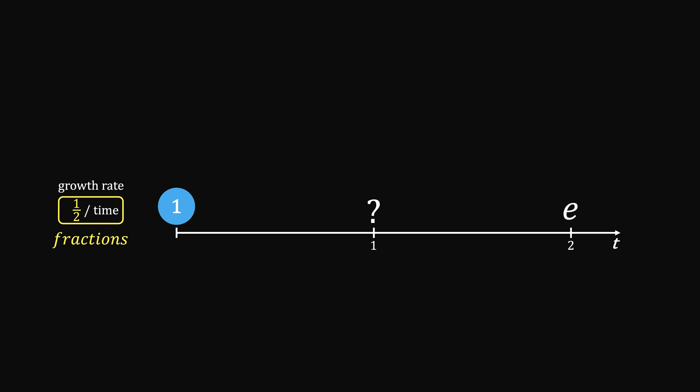Hence, at half of that time, it should become square root of e. Because it means per unit time, it multiplies by square root e times,